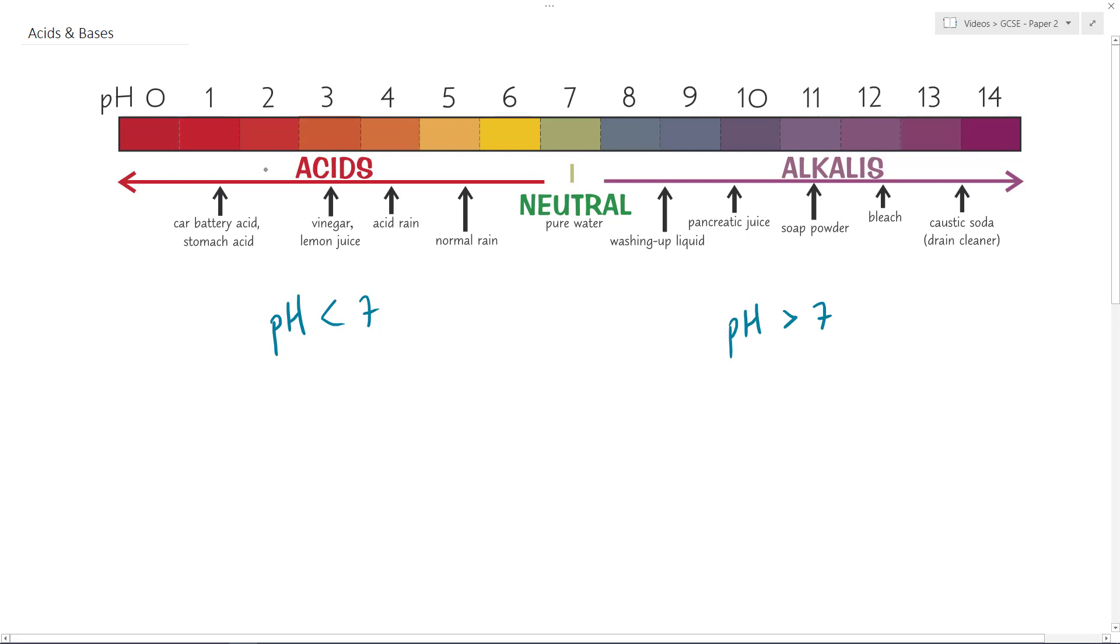This is a general pH scale and they tend to normally have this type of color which goes sort of rainbow: red, orange, yellow, green in the middle here for neutral, right through to blue, indigo, violet, purple color across on the right hand side.